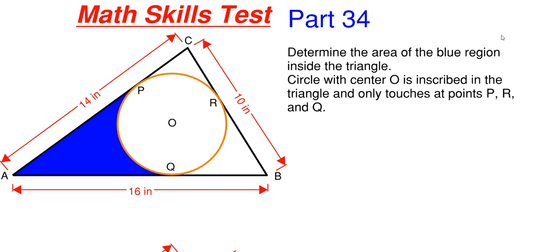This will be our 34th part in this particular math skill series. We have to determine the area of the blue region shown inside this triangle. We are given dimensions on the outside of the triangle and we are told that this orange circle has its center at O and is inscribed within the triangle, meaning it only touches the triangle at points P, R, and Q.